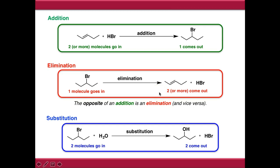This invariably leads to some loss of saturation, so you'll put in a saturated starting material and you will end up with some degree of unsaturation in the product. Usually this is in the form of an alkene or a carbon-carbon double bond.